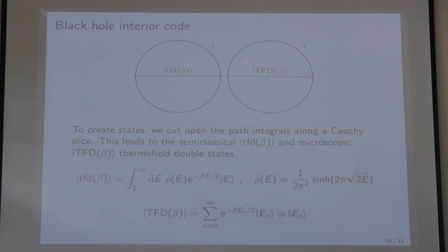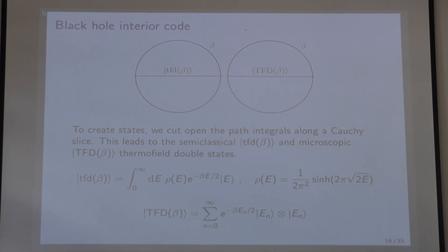So pictorially — the projector unfortunately doesn't show the gray — on the left you should imagine the circle is filled in with a gray disk. To create states, we cut open the path integrals along equal-time slices. This leads to the semi-classical state — a lowercase TFD — and the microscopic state — capital TFD — which lives on two boundary points. In JT gravity, the bulk TFD is a continuous sum over energy eigenstates, while the boundary state has a discrete sum over a tensor product of Hilbert spaces — two energy eigenstates weighted with the Boltzmann factor over 2. This rho is the JT density of states that comes from the Schwarzian path integral.